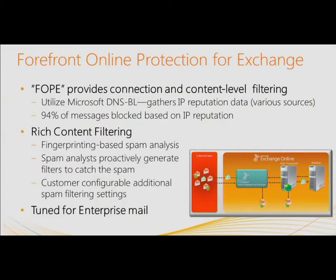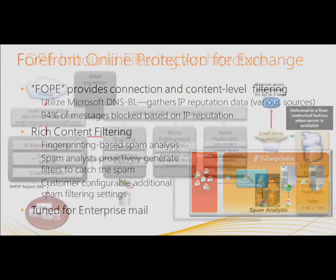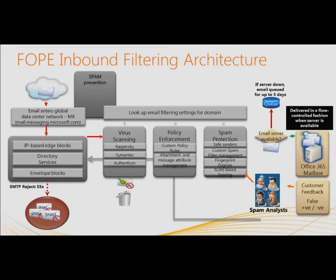Let's talk about the architecture. Three major points that you're going to control or that directly affect you are antivirus, the policies, and spam pieces within the FOPE structure. The IP-based edge blocking scenarios are controlled by Microsoft. The second piece, called directory-based edge blocking, needs to be configured by the administrator. Basically, your emails land into FOPE because you're pointing the MX record there.